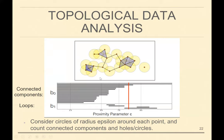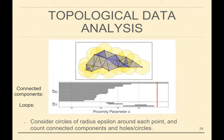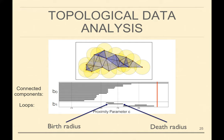We continue this process — fewer and fewer bars in the connected component. We start seeing more interesting things: an actual loop and another one here — basically holes. We drew edges whenever we have pairwise interactions between those balls. Two bars show up in the one-dimensional hole category corresponding to those two loops. They started at a certain value of the proximity parameter and will end at a different value. This is the birth radius and death radius of a topological feature. Since we're going to add time as another dimension, we refer to these as birth and death radii rather than birth and death times.